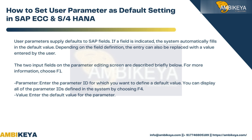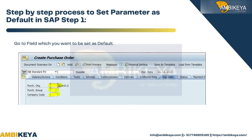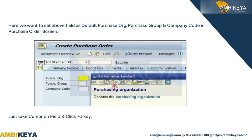Value: enter the default value for the parameter. Step-by-step process to set a parameter as default in SAP. Step 1: go to the field you want to set as default. Here we want to set the Purchase Org, Purchase Group, and Company Code fields in the Purchase Order screen.